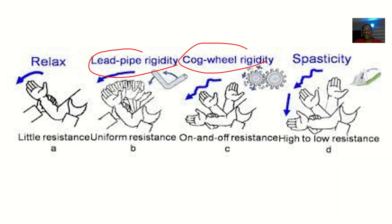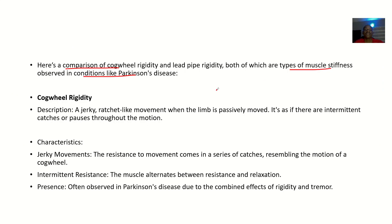For cogwheel, you can see the cogwheel — they put out the wheel here with spokes that come into each other and go out, so it's intermittent. Cogwheel rigidity is a jerky, ratchet-like movement when the limb is passively moved — that is, moved by someone else. Active motion is when you are moving by yourself; passive motion is moved by someone else.